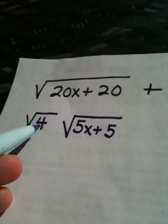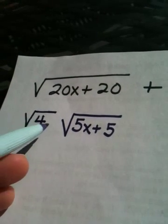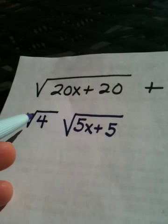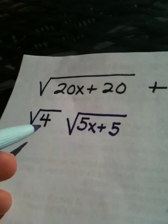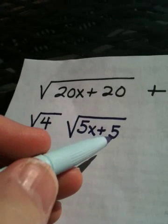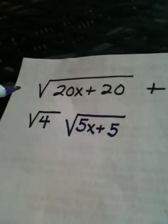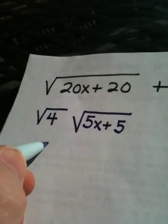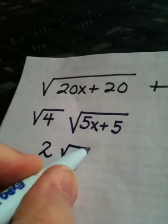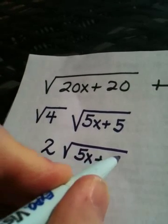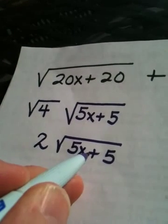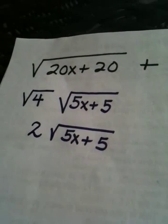So basically, 4 is the perfect square that I took out from under the radical. It's going to come out because it's a perfect square, and 5x plus 5 is going to remain. This becomes 2. So we have 2 times the square root of 5x plus 5.